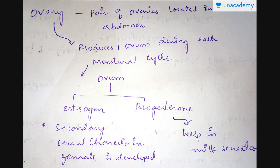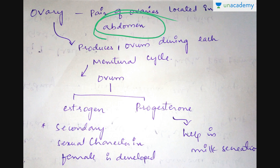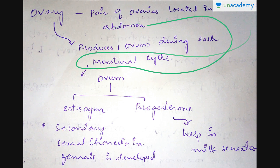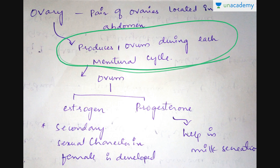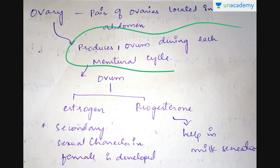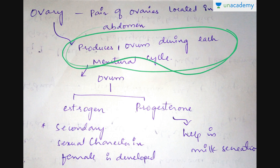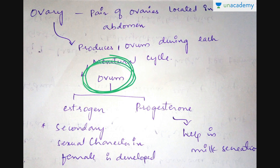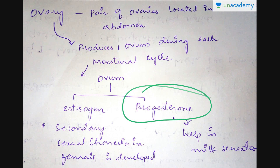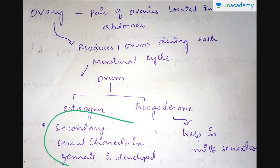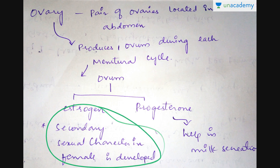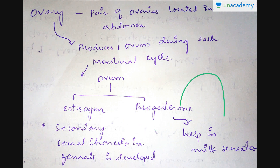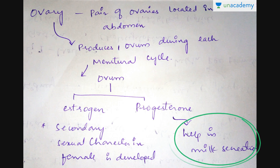Coming to the ovaries — a pair of ovaries are located in the abdominal region in females. The ovary produces one ovum during each menstrual cycle. The ovary secretes two types of hormones: estrogen and progesterone. Estrogen helps in the development of secondary sexual characters in females, and progesterone helps in milk secretion during lactation or pregnancy.